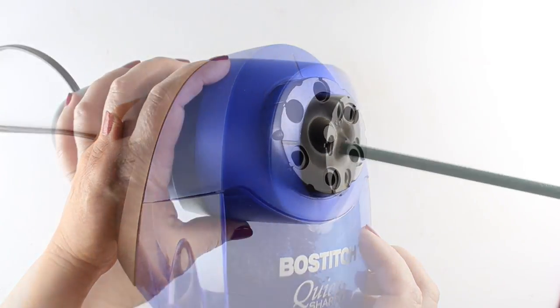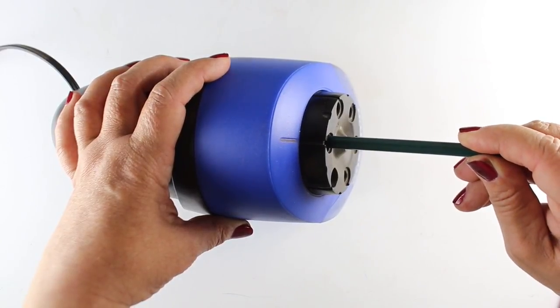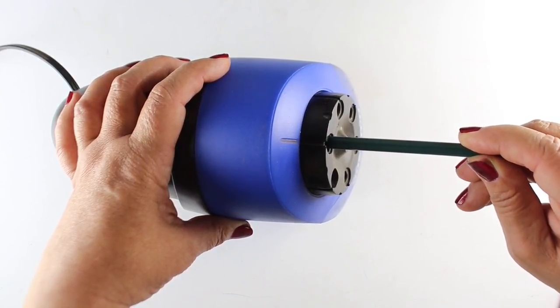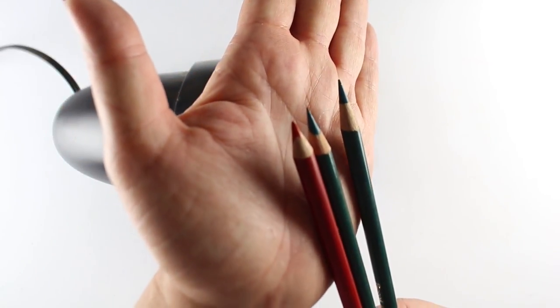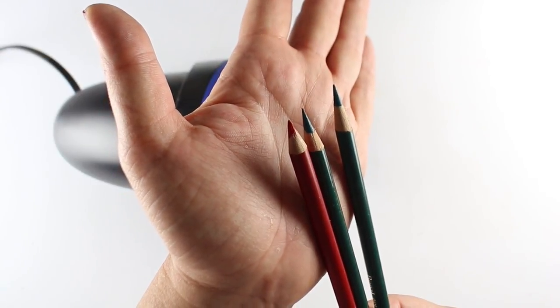This little drawer comes out so you can empty shavings. It's got holes so you can use different size pencils. Did you notice how that slowed down? It didn't keep eating the pencil. It really does save you a lot of lead to have a good sharpener like this. The one on the right is the one that was sharpened by that sharpener.